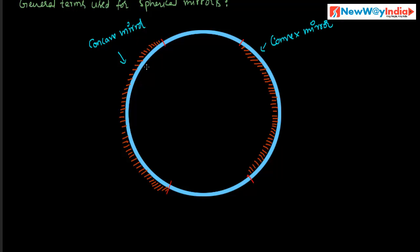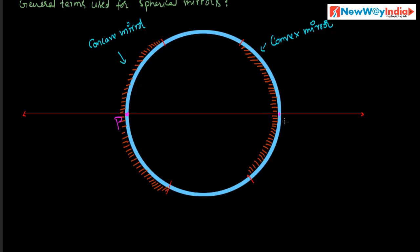For concave mirror, the reflecting surface is inwards, and for convex mirror, the reflecting surface is outwards. These are the two different types of mirrors. The midpoint of a spherical mirror is called pole — the midpoint of a concave mirror and the midpoint of a convex mirror. The pole is denoted by the letter P.